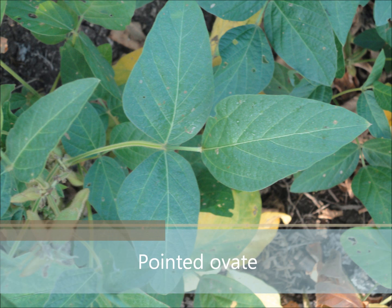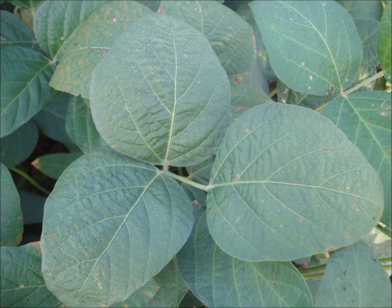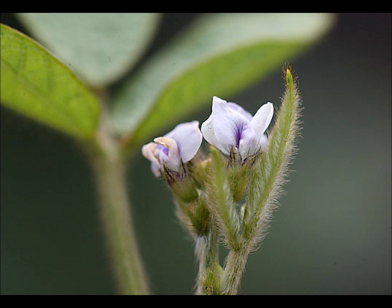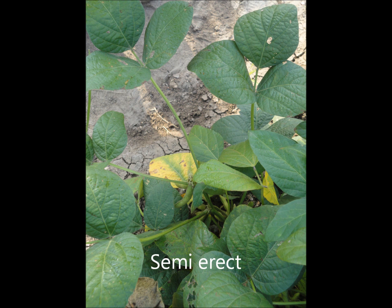There are three different types of leaves: Pointed Ovoid, Lanceolate, and Round Ovoid. The flower colors are white and purple. The plant growth habit includes: if the plant is short it is called erect, and if the plant is long it is called semi-erect.